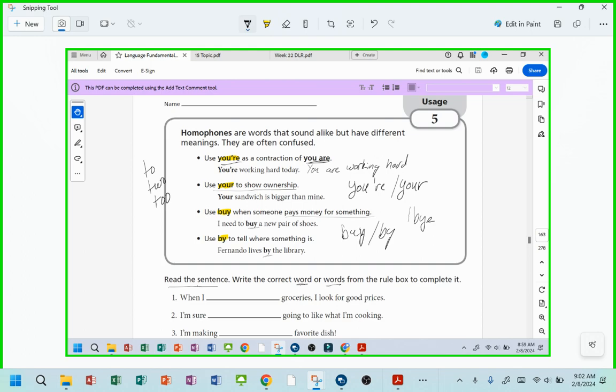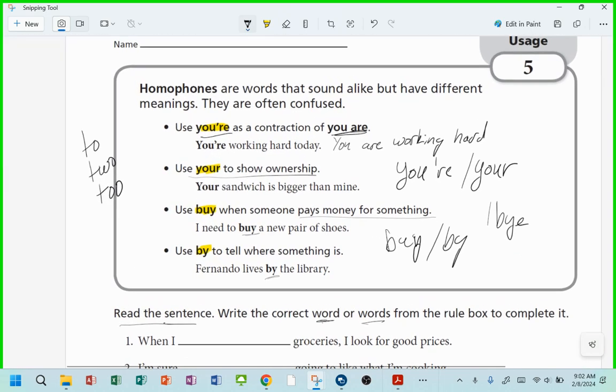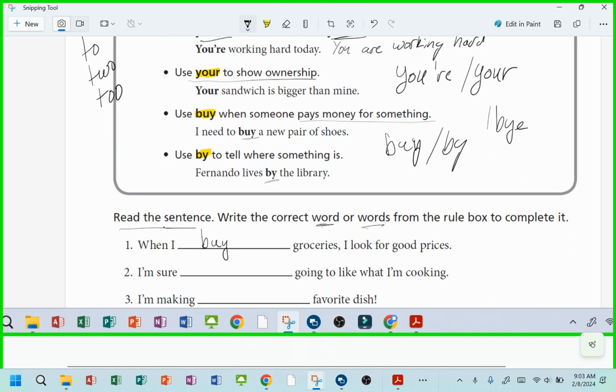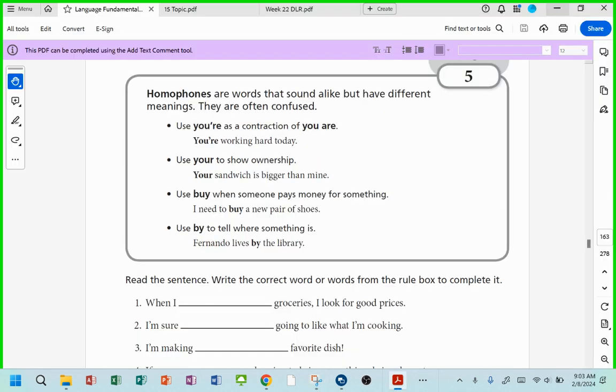So let's go. It says, when I blank groceries, I look for good prices. Which version of buy do we need to put there? Which version of buy? When I buy groceries, I look for good prices. Which version? B-U-Y. That's B-U-Y, correct? Yeah. So do you guys understand what you're doing for that part? All right. Let's turn it over to page six.